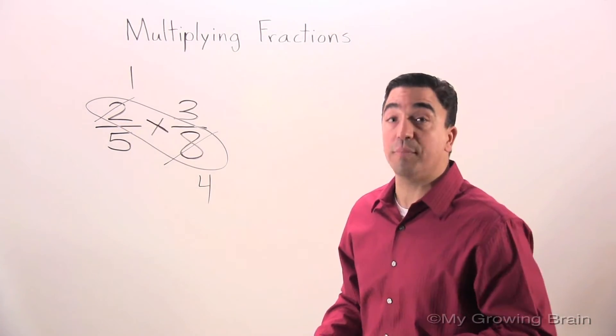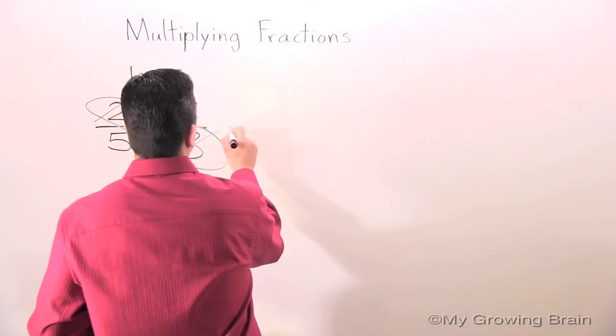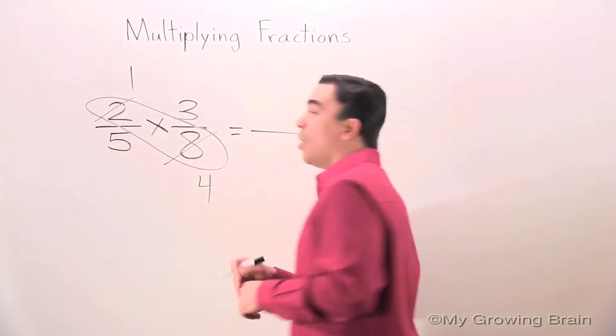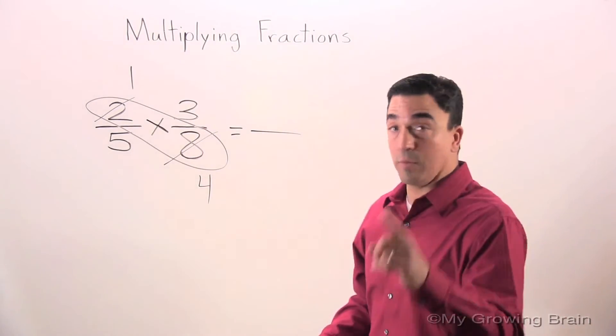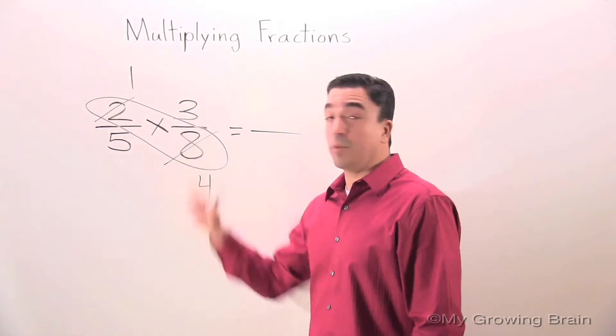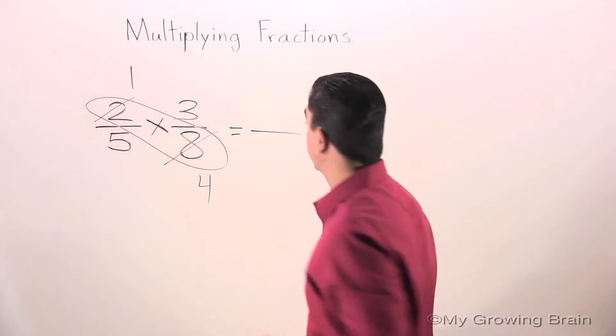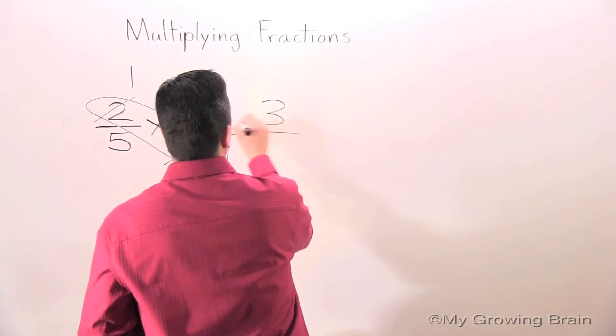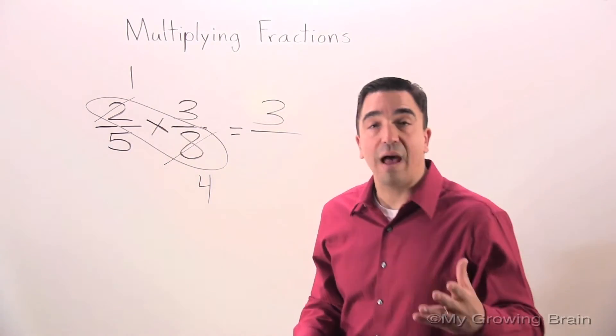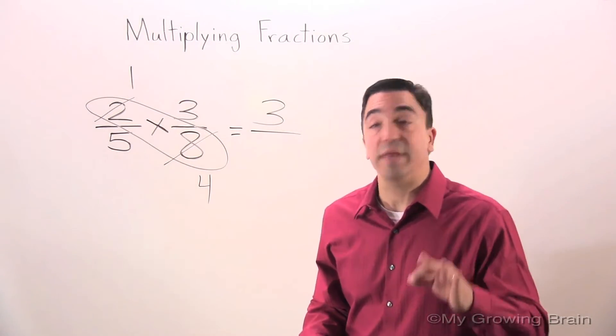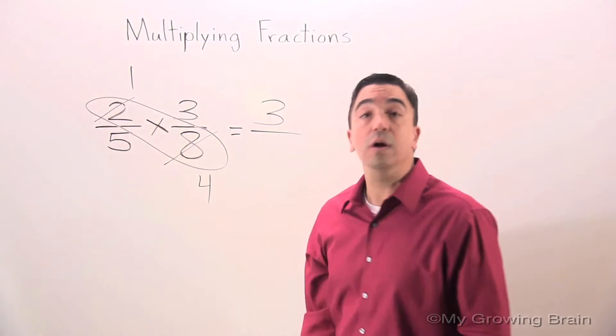Now it's time to multiply. We'll start with the numerators. 1 times 3 is 3. Now we'll multiply the denominators. 5 times 4 is 20.